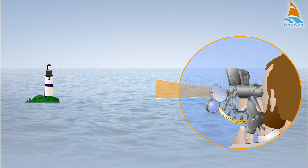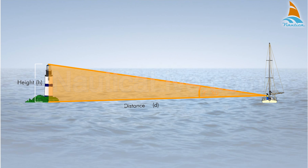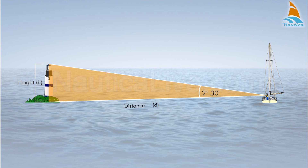Use the sextant and measure the vertical angle of the lighthouse. After applying the index error, the vertical angle is 2 degrees and 30 minutes.